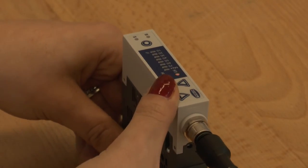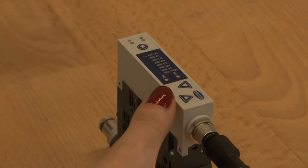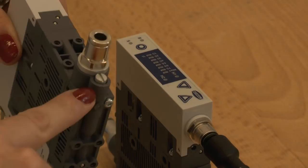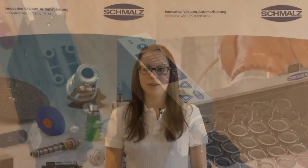The strength of the blow-off pulse can be adjusted with this throttle screw. Now you know how to program compact ejectors of type SCPS. Thank you very much for your attention.